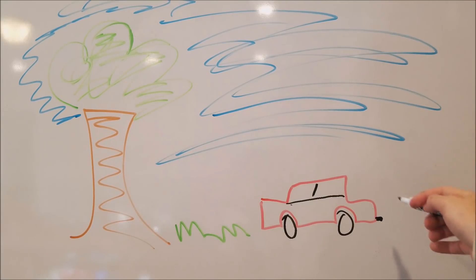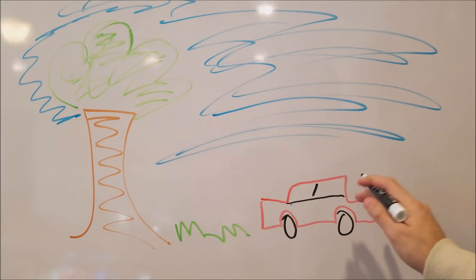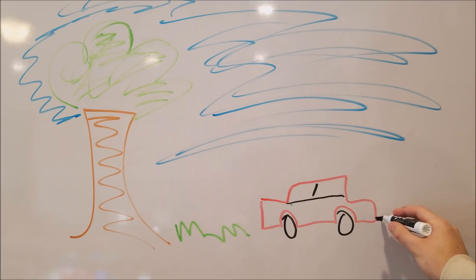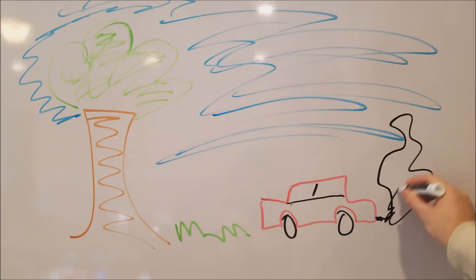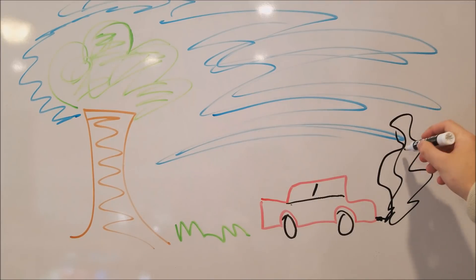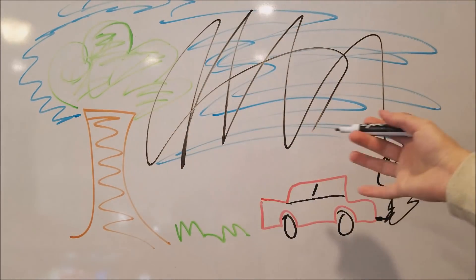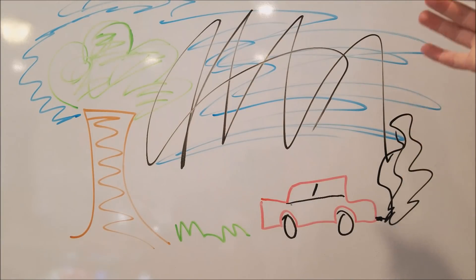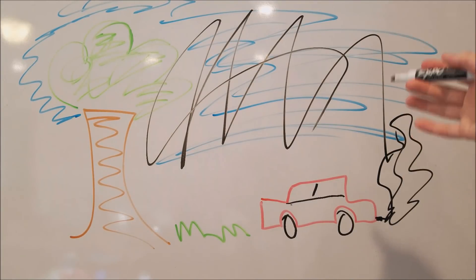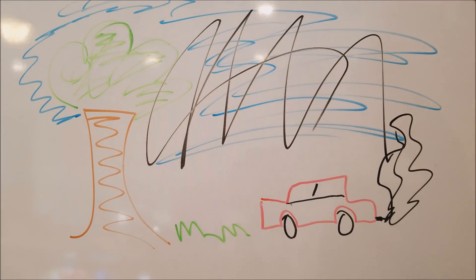Global warming is when chemicals such as exhaust and carbon dioxide from a car go up into the air and basically mess up everything. As you can see, this is our world with global warming causing temperatures to rise and animals to die.